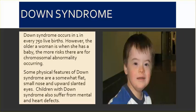Down syndrome occurs in one in every 750 live births. However, the older a woman is when she has a baby, the more risk there is for a chromosomal abnormality occurring. Some physical features of Down syndrome are a somewhat flat, small nose and upward slanted eyes. Children with Down syndrome also suffer from mental and heart defects.